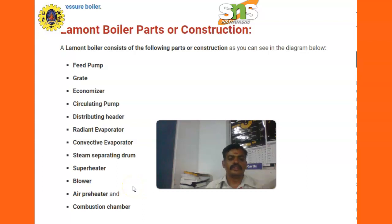Laumont boiler parts under construction. The Laumont boiler consists of the following parts: feed pump, grate, economizer, circulating pump, distributing header, radiant evaporator, convective evaporator, steam separating drum, superheater, blower, air preheater, and combustion chamber.